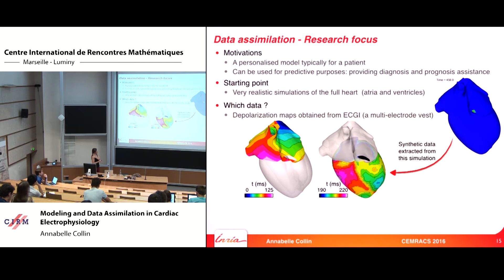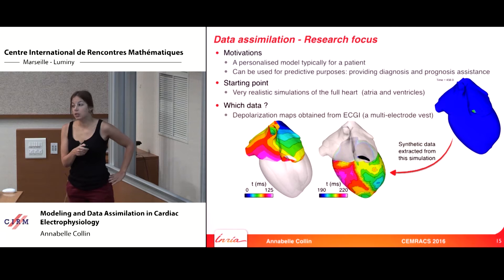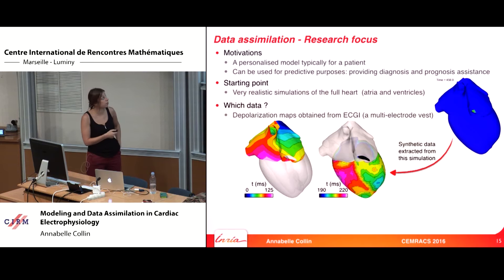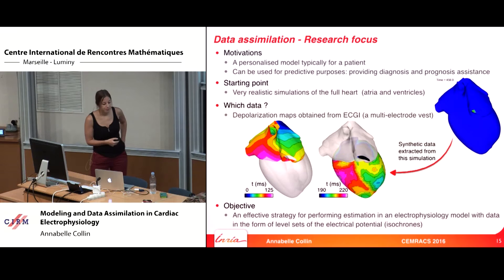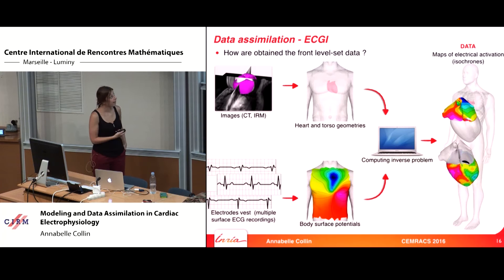When doing data assimilation, you must choose the data to assimilate. Here we consider the depolarization map. This means we know where the front is at different instants — for example, we know the front position at 5 milliseconds — but we do not have any information about the value of the transmembrane potential itself. We just know where the front is. The objective is to propose an effective strategy for estimations with data in the form of level sets.